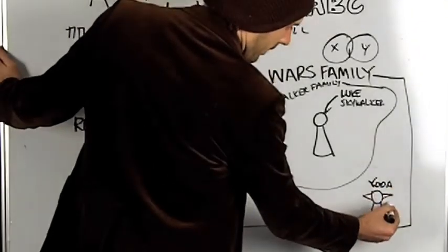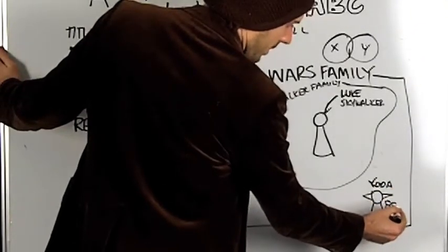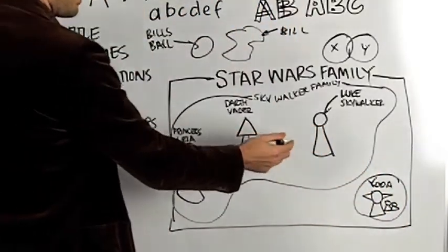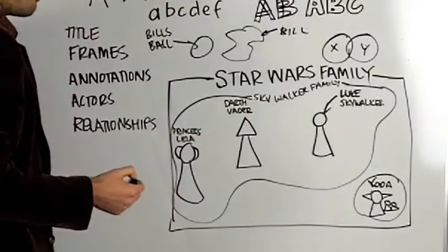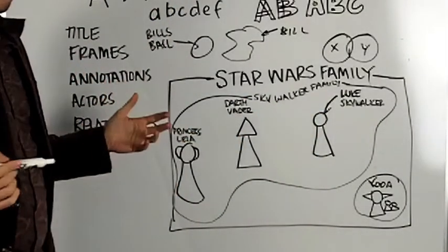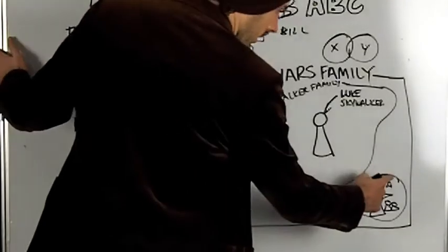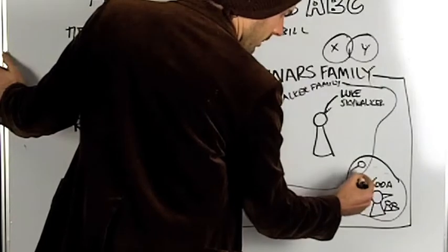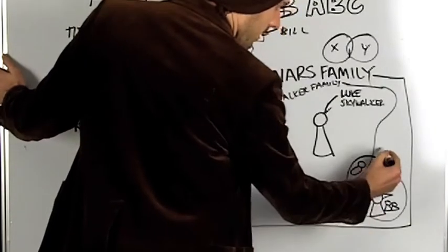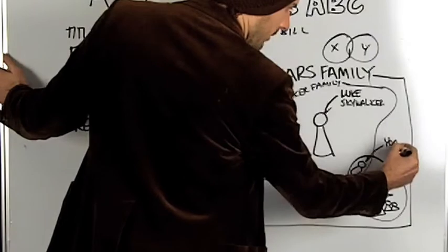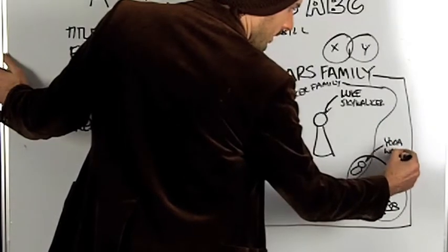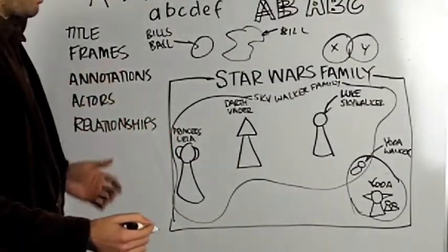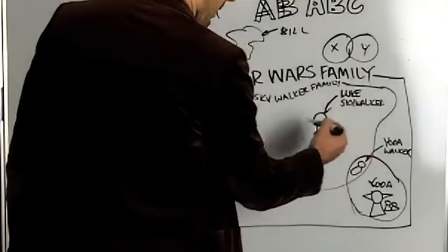So Yoda's family, if they're, I don't even know what his family is, would not overlap with the Skywalker family because they haven't made it. But if they had the child, I have no idea what that would look like, but that could be in here to represent the Yoda Walker family or baby. So there's your sort of classic Venn diagram.